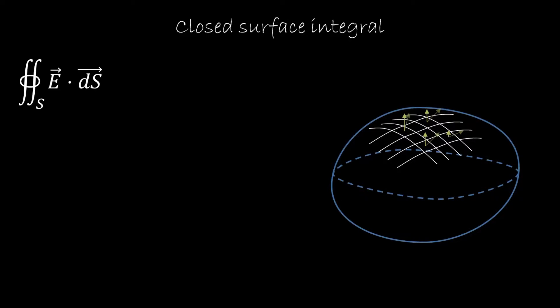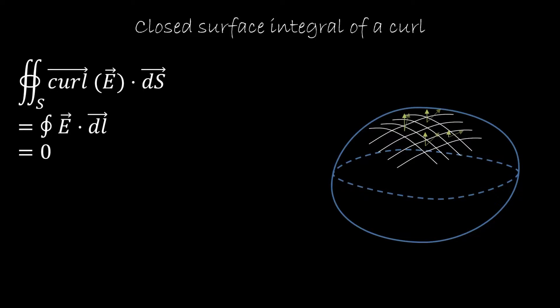In the same way that we looked at the surface integral of the curl, we look at the closed surface integral of the curl. What we saw before is that the surface integral of a curl is just equal to the line integral along the boundary. But the boundary of a closed surface doesn't really exist — it's zero. So the integral around the boundary is also going to be zero.